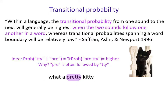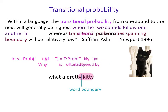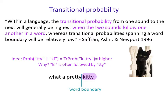The idea for using transitional probabilities for speech segmentation is that you're looking for differences in transitional probabilities. When you have a higher transitional probability, the idea is that you're within a word — 'pre' followed by 'ty' in 'pretty' may have a high transitional probability. But when you go across words, they're lower. So 'ty' followed by 'ki' is lower, signaling a word boundary, while 'ki' followed by 'ty' is higher because 'kitty' is an actual word.